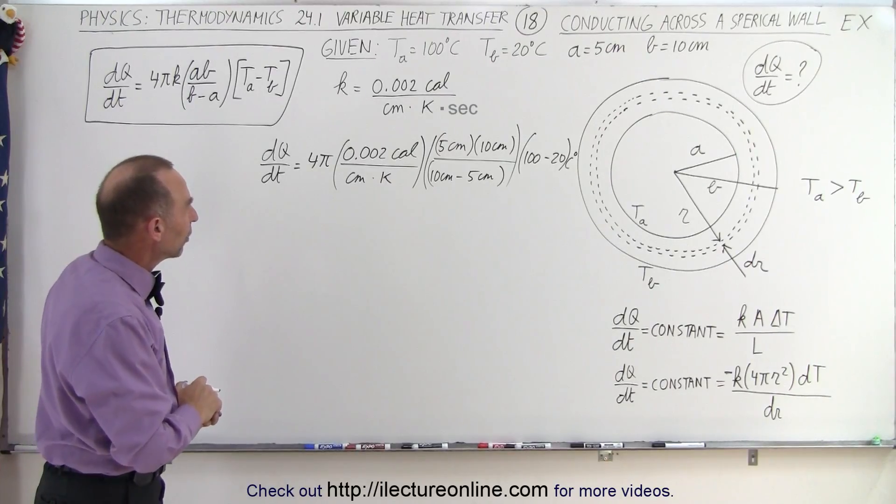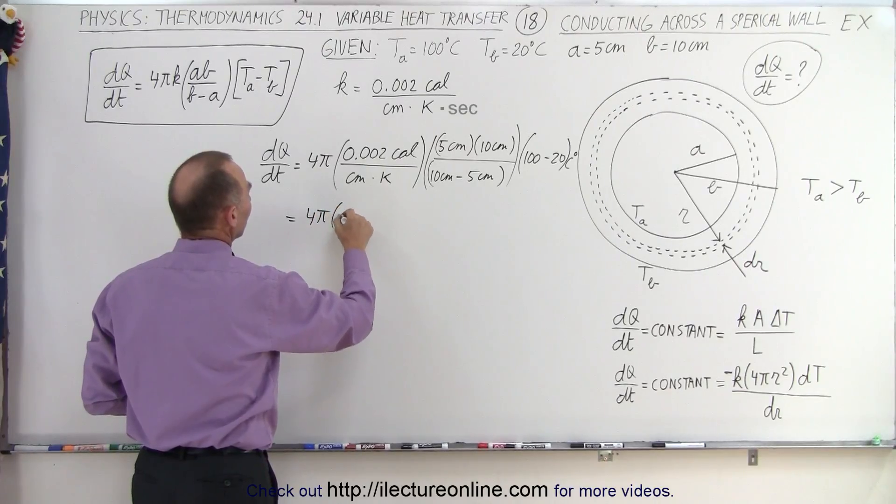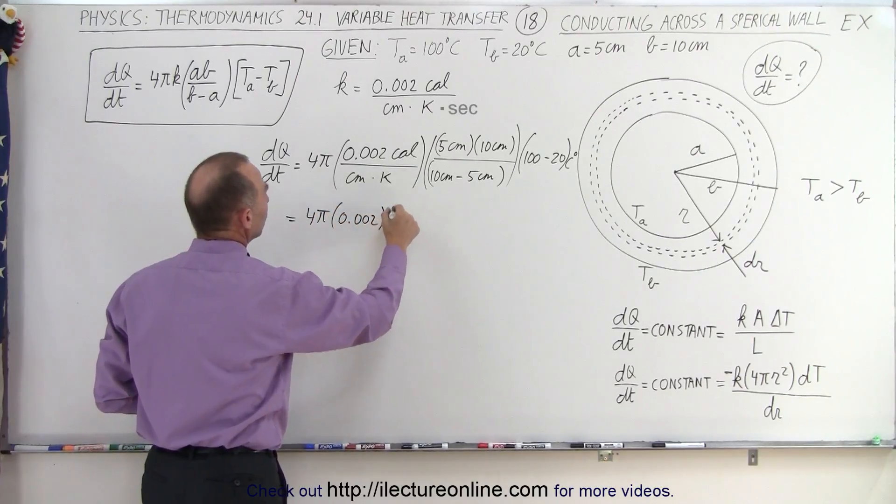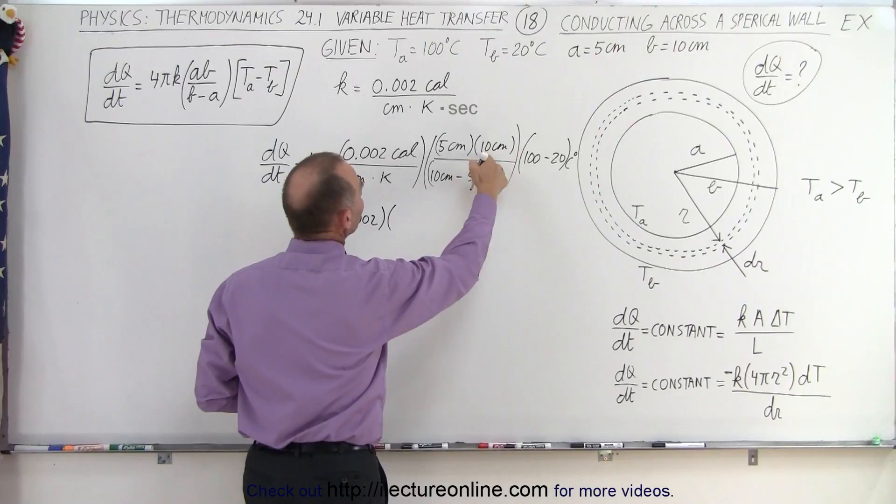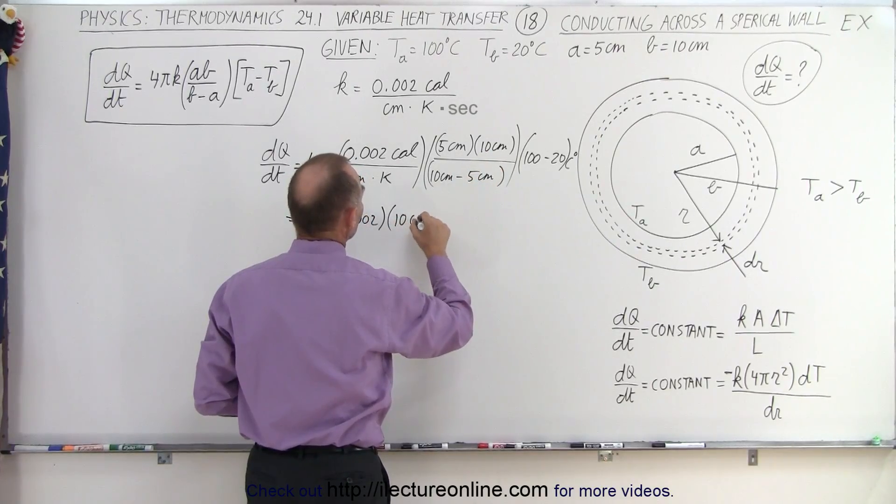All right, so let's simplify this. So we have 4π times 0.002 times, this would be 50 divided by 5 which is 10, and that would be 10 centimeters.